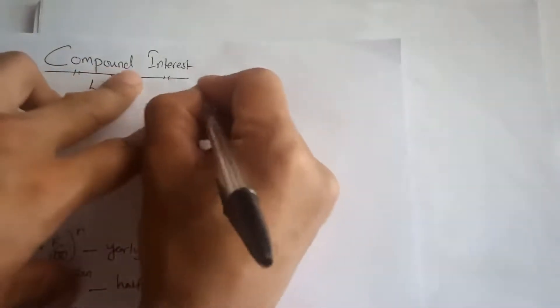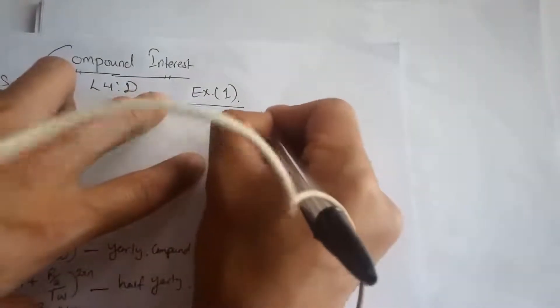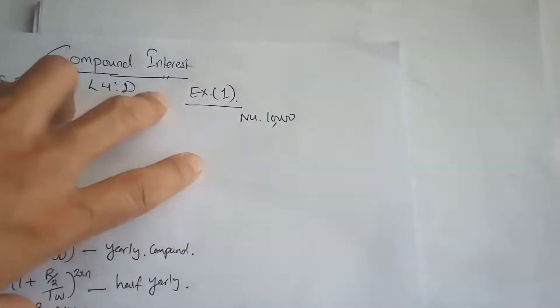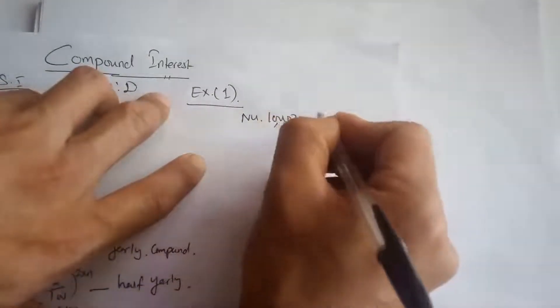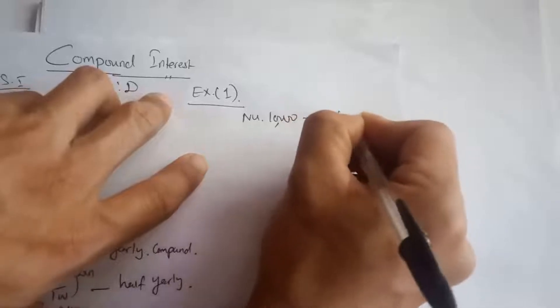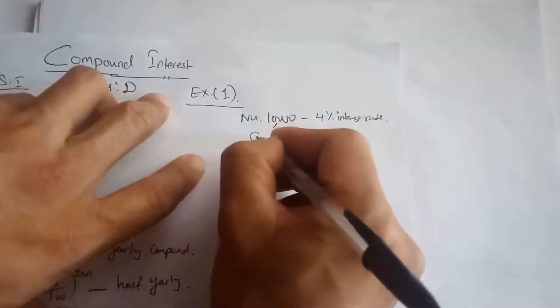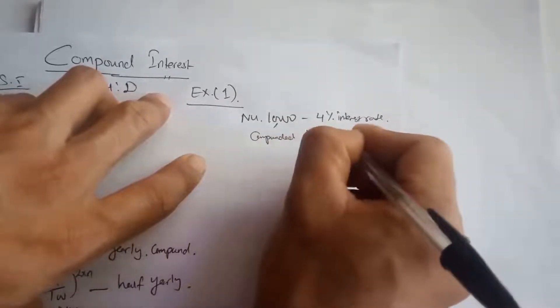For further understanding, we will go on to solving examples. Example number one: we are lending 10,000 rupees to someone at a 4% interest rate, which is compounded half-yearly.